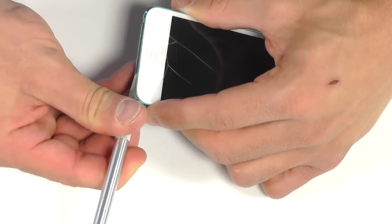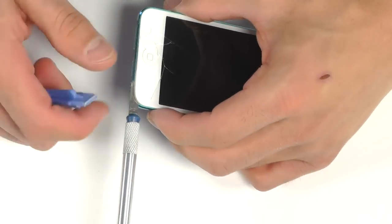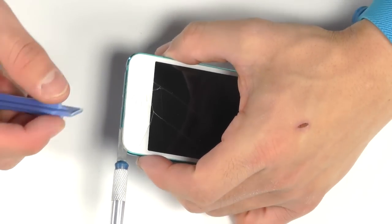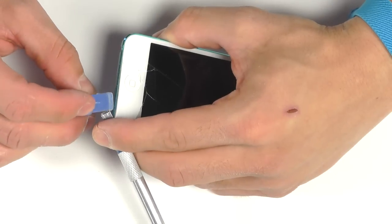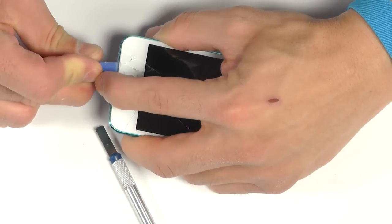Once you've peeled up enough separation to fit a plastic opening tool, we can continue around the perimeter of the display with the plastic opening tool as we separate the display completely from the base of the iPod.